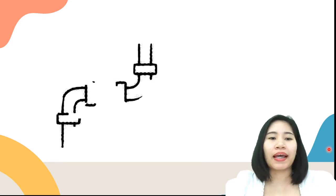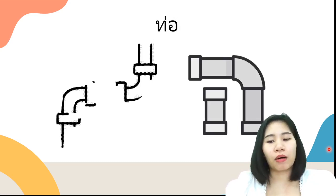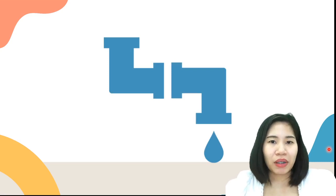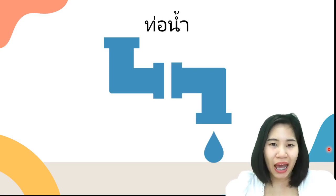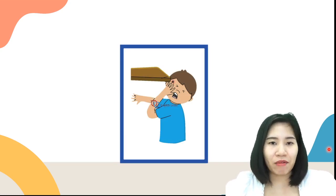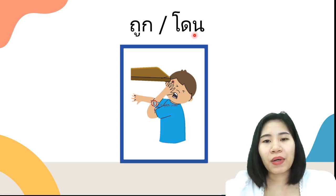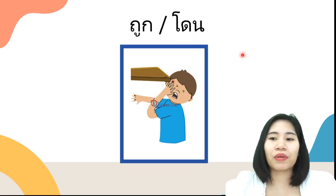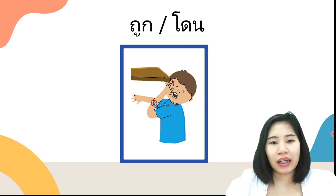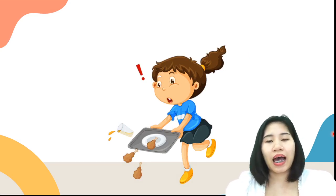ดูคำศัพท์ก่อนนะคะ A tube or pipe in Thai we say ท่อ Next one, water pipe in Thai we say ท่อน้ำ Next one, this one is the auxiliary verb to turn the sentence into Passive Voice. The first one is ถูก and the second one is โดน.